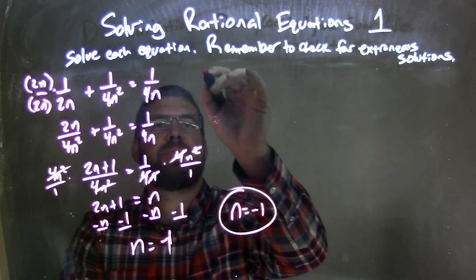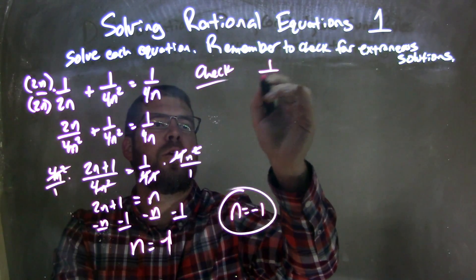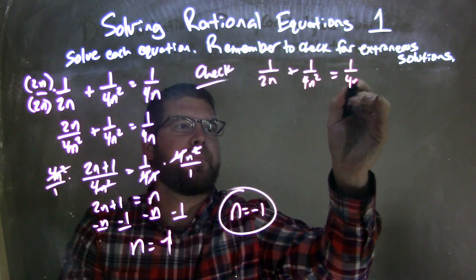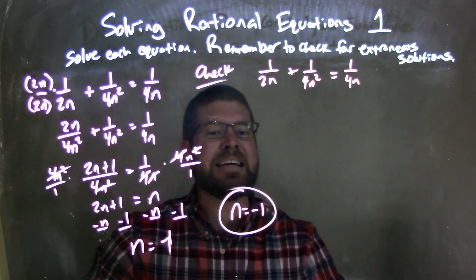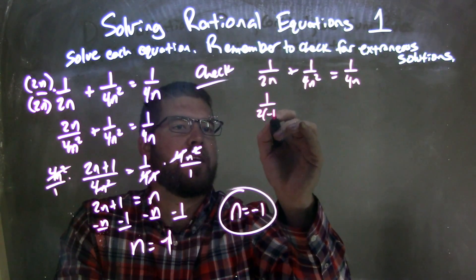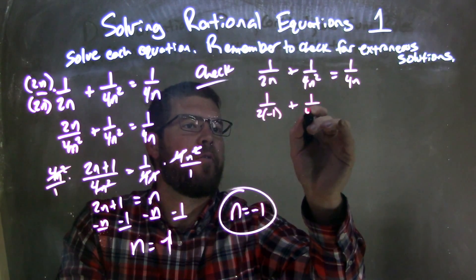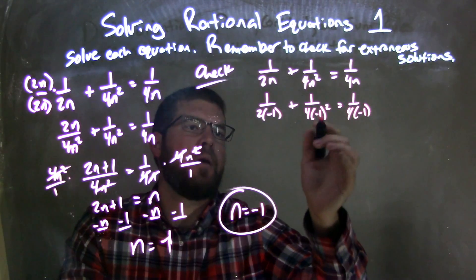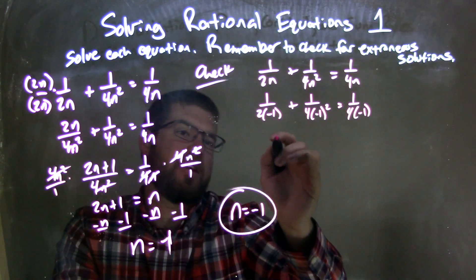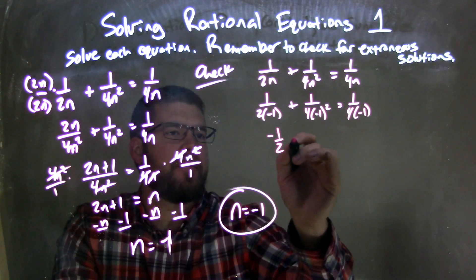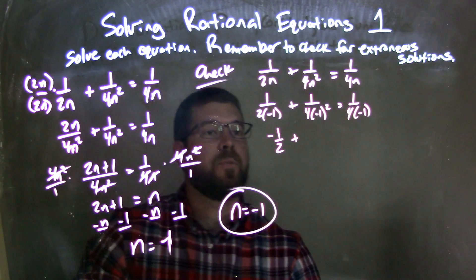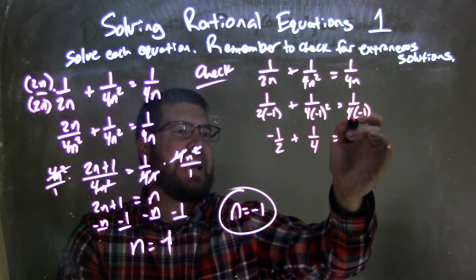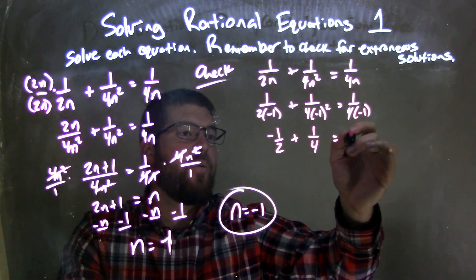Now I need to check that. I'll rewrite my equation: 1 over 2n plus 1 over 4n squared equals 1 over 4n. Let's plug in negative 1 for n. So we have 1 over 2 times negative 1, plus 1 over 4 times negative 1 squared, equals 1 over 4 times negative 1. Simplifying: 2 times negative 1 is negative 2, so we have negative 1 half here, plus negative 1 squared is positive 1, giving plus 1 fourth, equals negative 1 fourth.